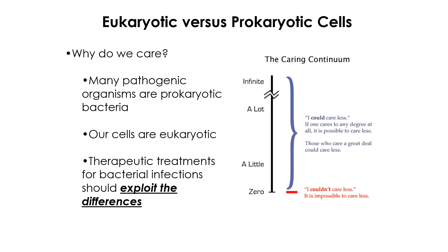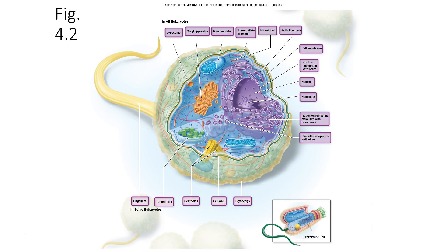Toward the end of the semester when we get to the immune system, you'll see that our immune systems are programmed to key in on prokaryotic cell features that are not features of our own cells. So this distinction will come up quite a bit during the semester. To summarize: bacteria and archaea are prokaryotic, and everything else falls into the eukaryote category.